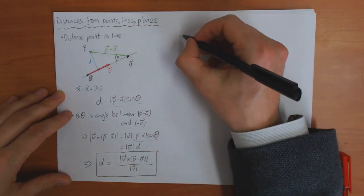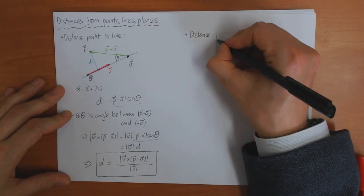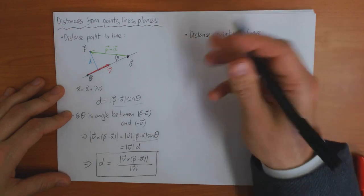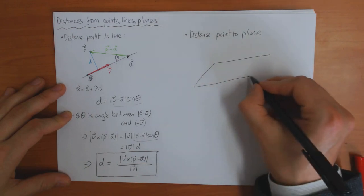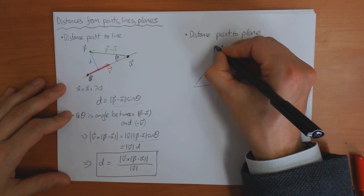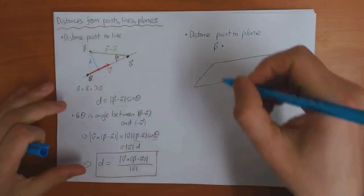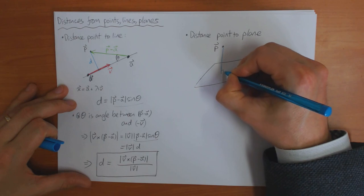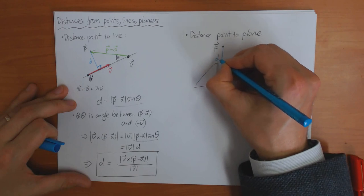Similarly, we can find the distance from a point to a plane — the idea is very similar. Let me draw the picture again: I have some plane, and I have some point P not on the plane, and I want to know the shortest distance from this point to the plane. The distance D should be perpendicular to the plane.